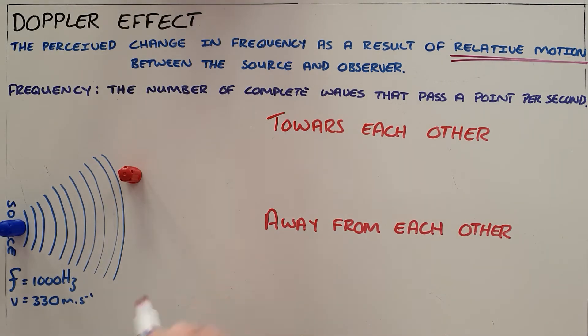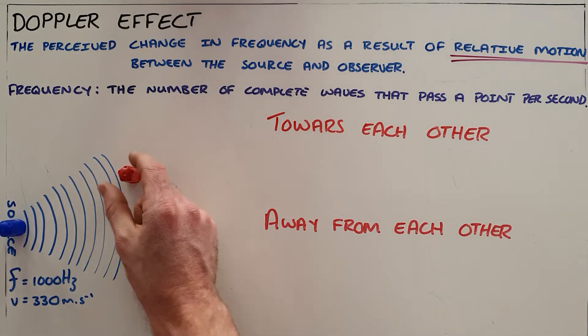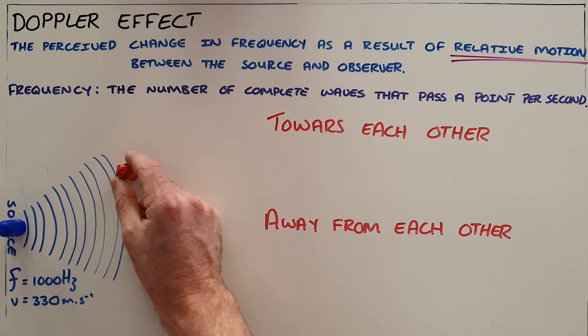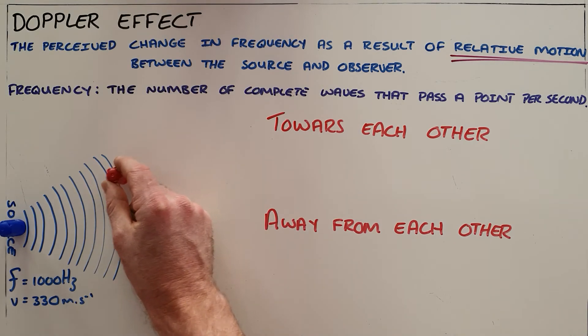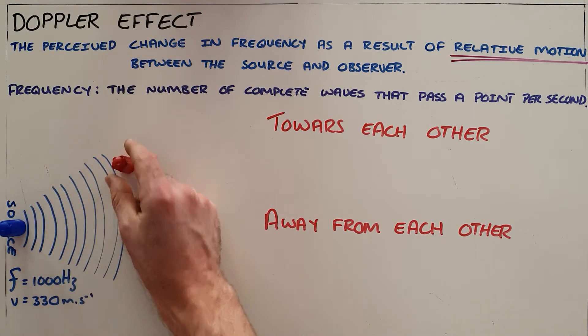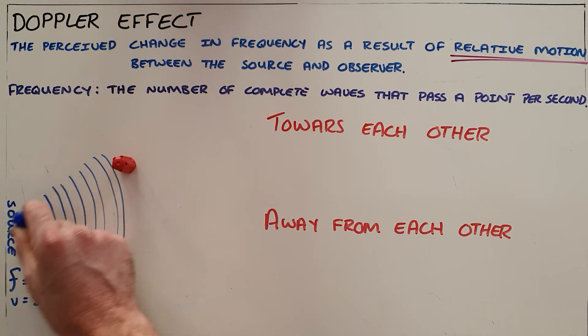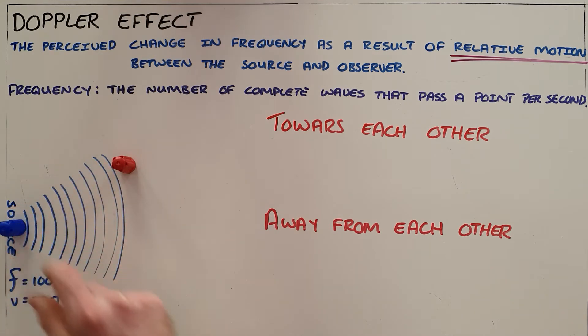The first is when there is relative motion in which the source and observer are moving towards each other — whether it's the source moving towards the observer or the observer moving towards the source does not matter.